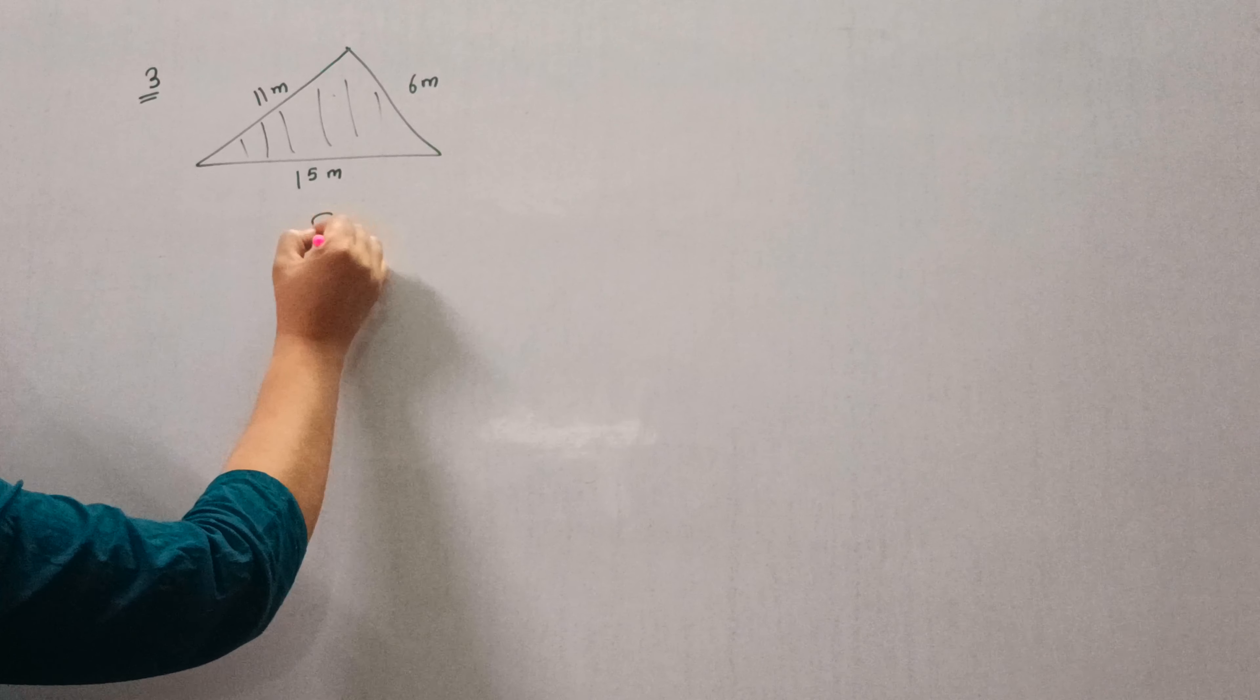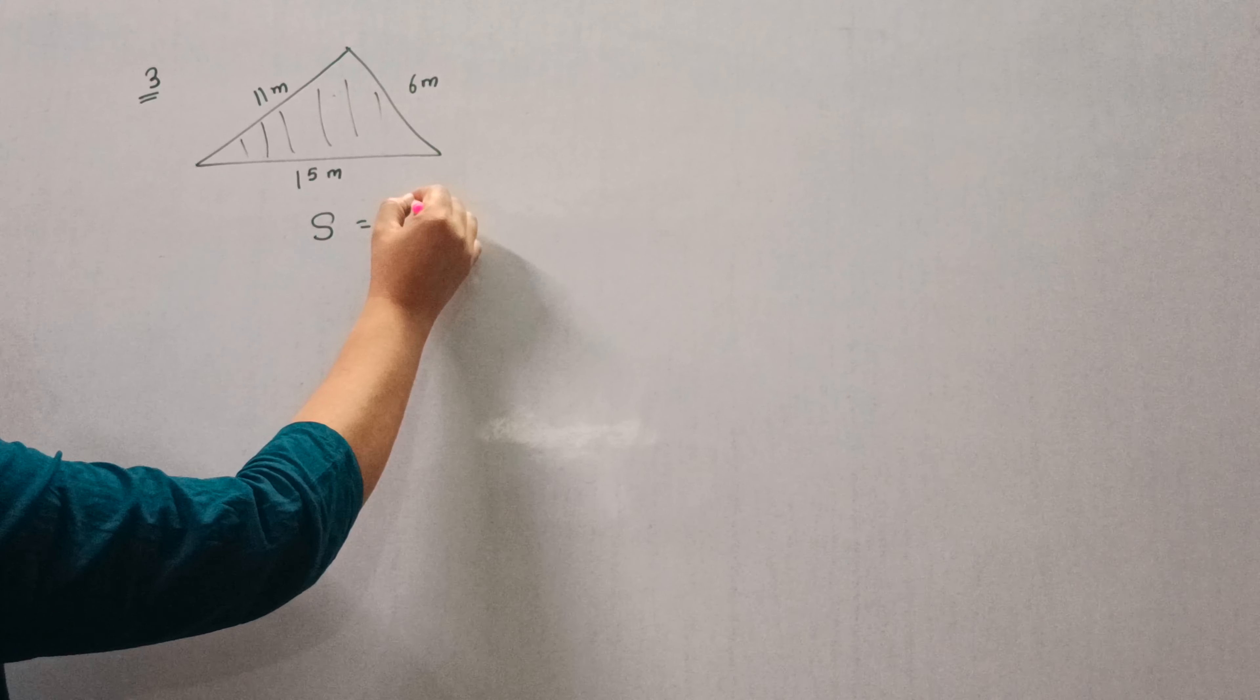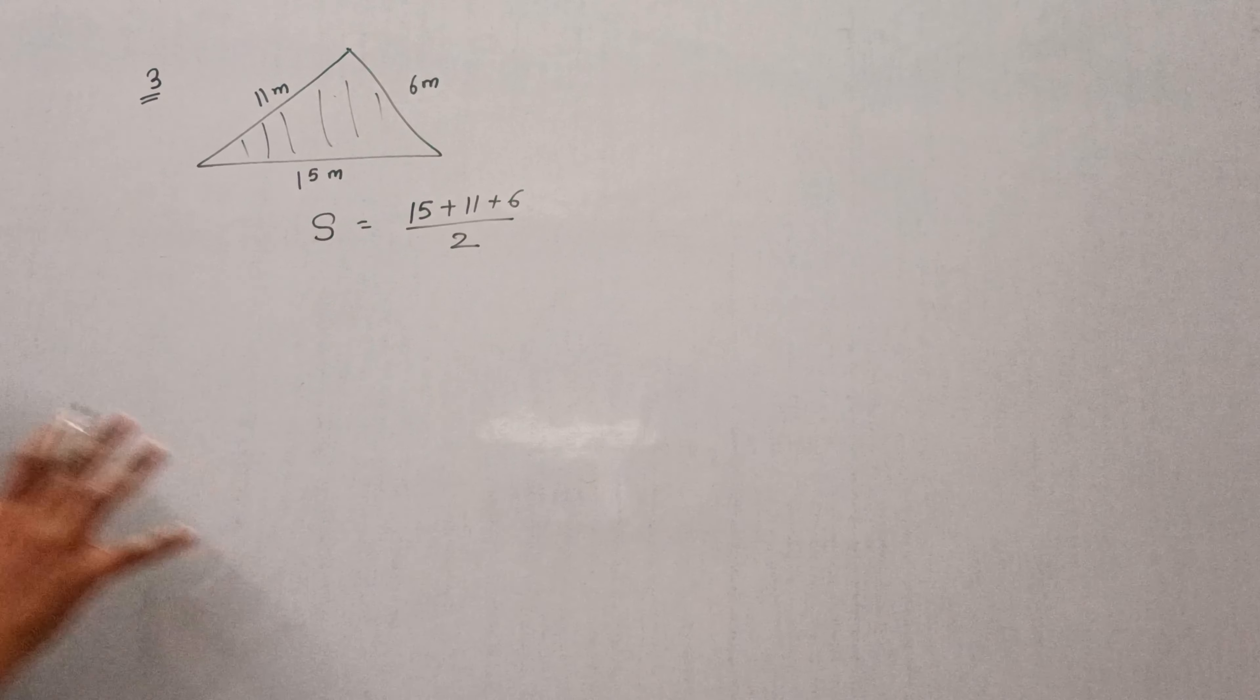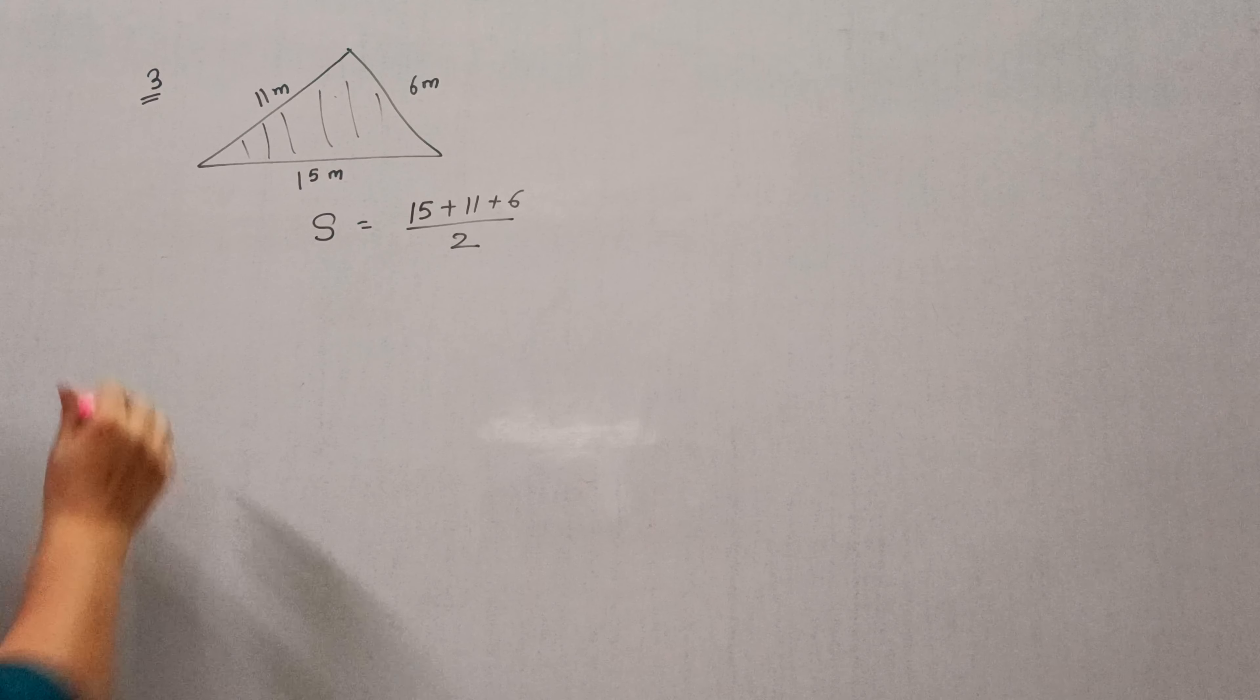So this part is color. Means you want to find the area of this triangle. So first of all we will find S. So S will be 15 plus 11 plus 6 divided by 2. S means semi-perimeter.